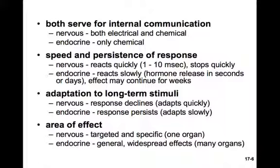When we compare the nervous and endocrine systems, we find they are very tightly related and sometimes difficult to separate — they are certainly interdependent. Both serve for internal communication. The nervous system is both electrical and chemical in nature, whereas the endocrine system has only chemical communication. The nervous system reacts much more quickly, 1 to 10 milliseconds, and stops much more quickly. However, because the endocrine system secretes hormones into the blood and they circulate throughout the body, their effect may last from minutes to days, or even weeks.